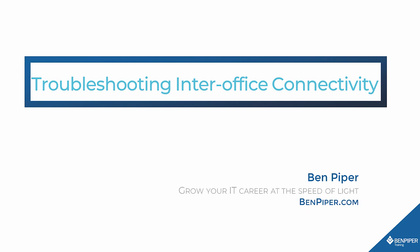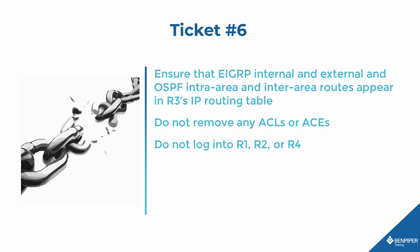Welcome back, my friends. We're going to troubleshoot inter-office connectivity. As always, we're trying to simulate the exam, so for each problem we'll read the trouble ticket and look at the topology diagrams as needed. Ticket number six: Ensure that EIGRP internal and external and OSPF intra-area and inter-area routes appear in R3's IP routing table. Do not remove any access control list or access control entries, and do not log into R1, R2, or R4.